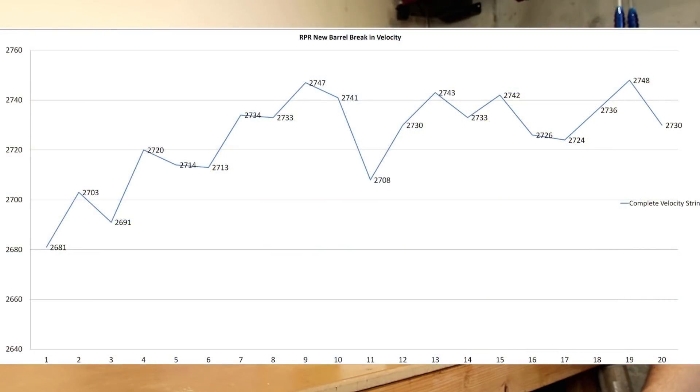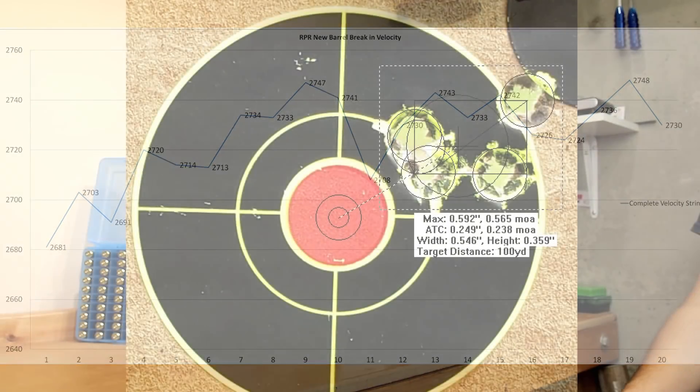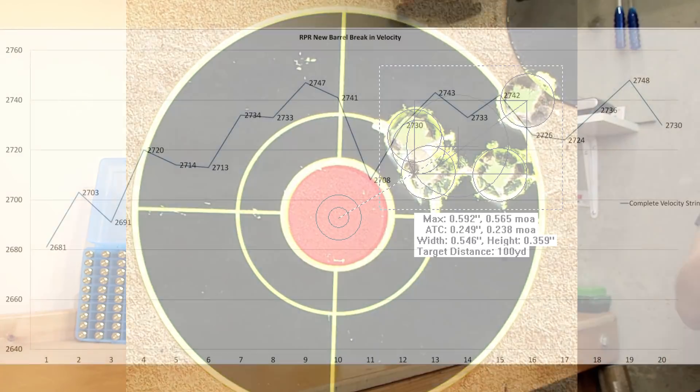Again, our low velocity of 2713, and then we jumped up for the next four shots. Out of those five shots, we actually had a .565 MOA group. Can't complain about that. Our standard deviation on those was only 12.8, but again, that first shot really did hurt our extreme spread. If we removed the first shot, our extreme spread on the last four was only 14 feet per second.